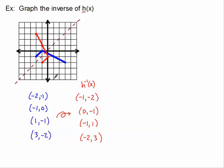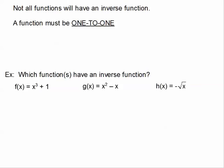Even though the blue graph is a function because it passes the vertical line test, this red inverse graph does not pass the vertical line test — it fails in a couple of different places. If we draw a vertical line through it, it crosses more than one spot. So the blue is a function, but its inverse is not a function. Not all functions will have an inverse that is a function.